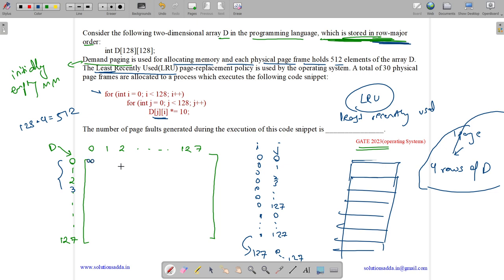Here this index is 0,0. This is 0,1. This is 0,2. This is 0,3. This is 0,127. This is 1,0. This is 1,1, 1,2, 1,3, 1,127. This is 2,0. This is 3,0. This is 4,0, 5,0, 6,0, 7,0, up till 127,0. Now what happens?